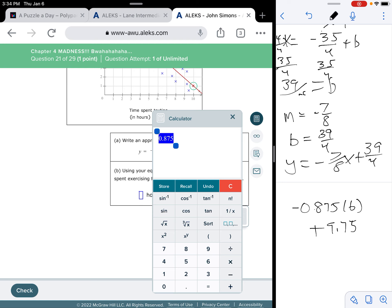So, let's pull up the calculator. And we have 0.875 times 6. All right. So, that is negative 5.25. So, I'm taking this away from 9.75.